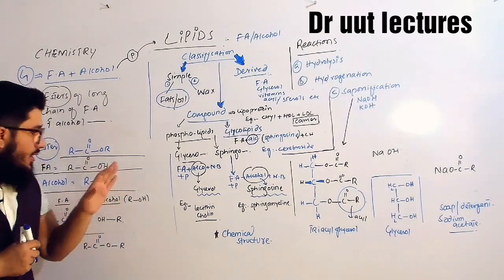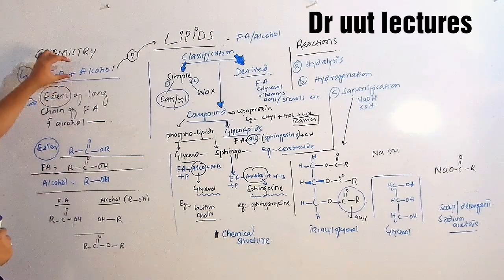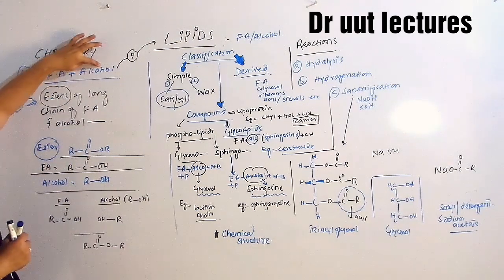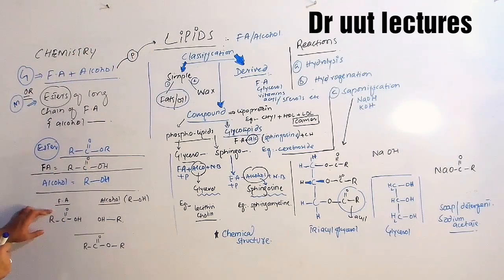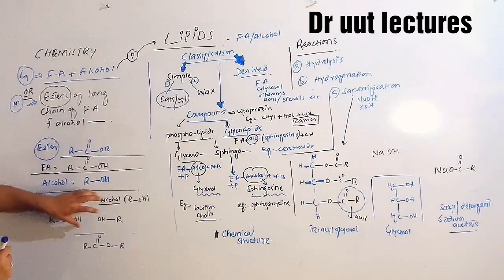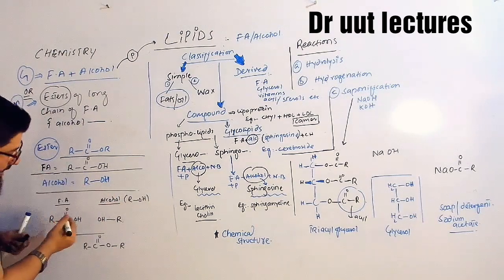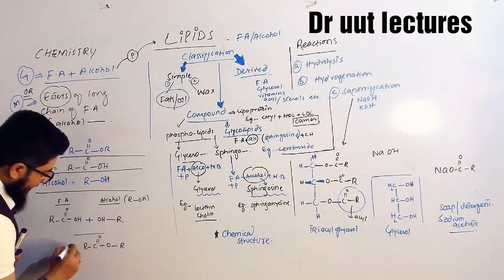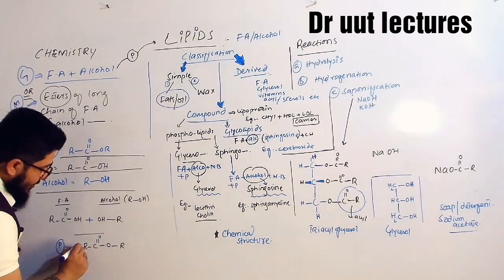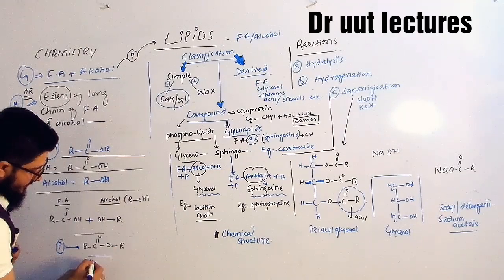Now coming towards our first definition. When fatty acid and alcohol combine together they will make a product, and that product is known as a lipid. When you take this fatty acid and this alcohol and react them together, they will bind together and make a product. This product is actually known as a lipid.